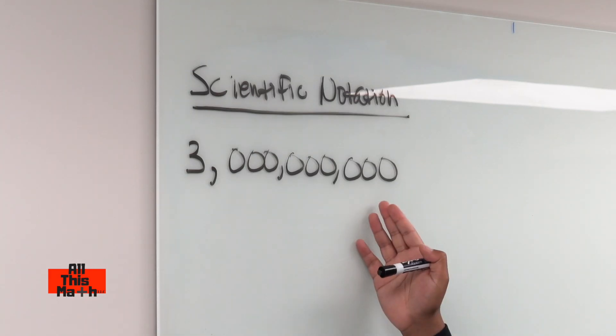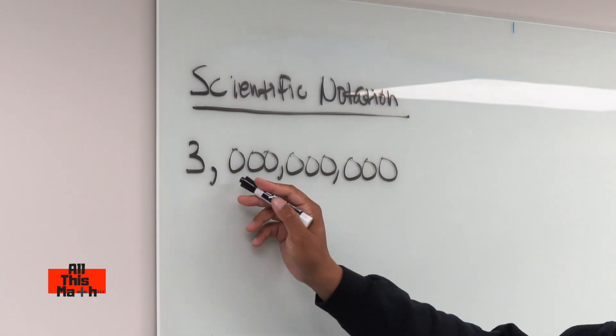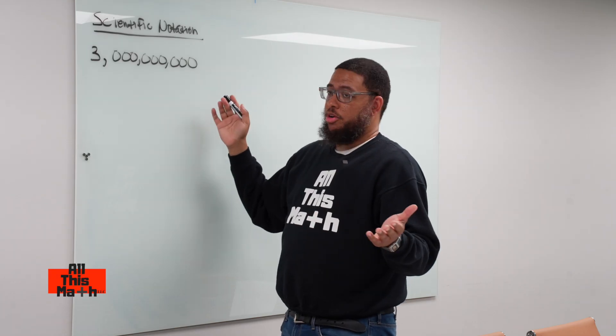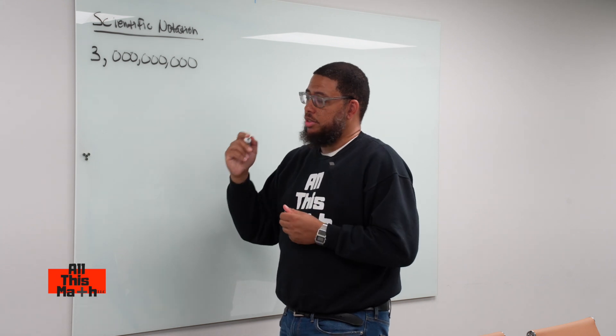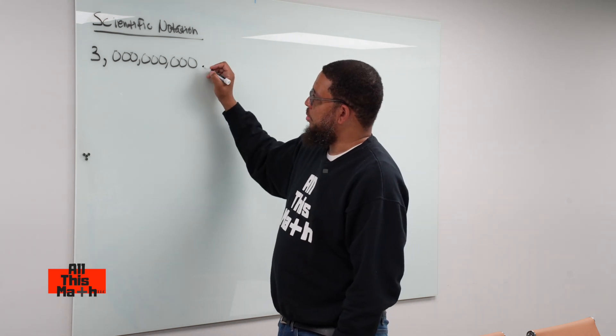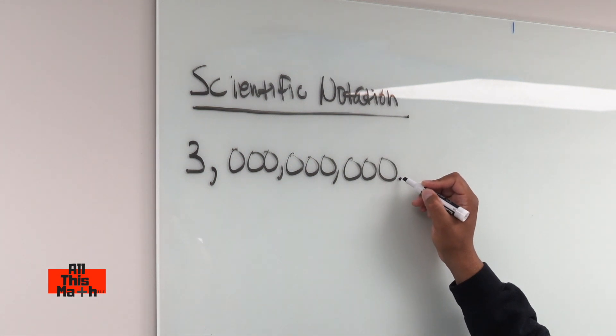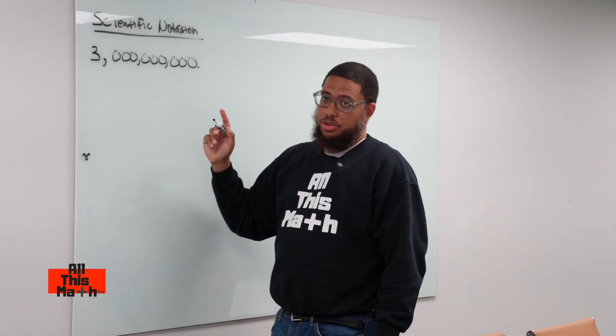Now, if I look at this number, and this is three billion - it's nine zeros, three and nine zeros, that's three billion. I don't see a decimal point written, but understand that there's an invisible decimal point at the end of the number. So we can understand there's an invisible decimal point right here, so I'm just going to write it.